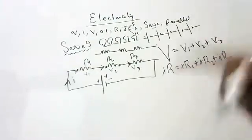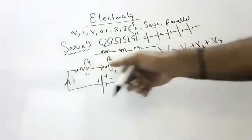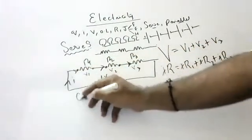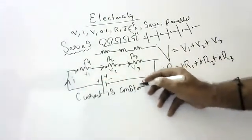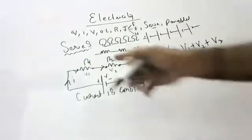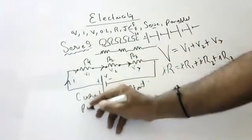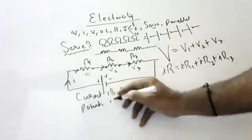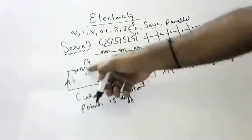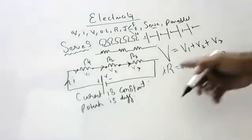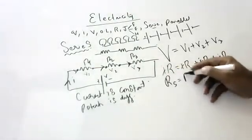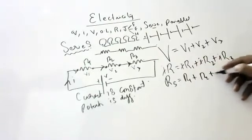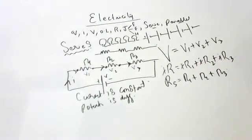Why am I not writing I1, I2, I3? Because current is constant in series — current is constant. What is changing? Only potential. Because resistances are changing, potentials are changing. So cancelling I on both sides, we get effective resistance R_eff = R1 + R2 + R3.